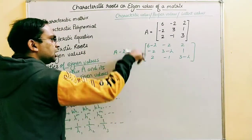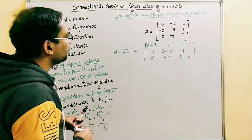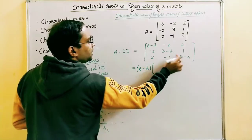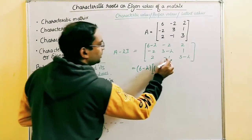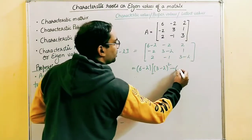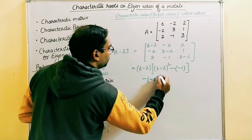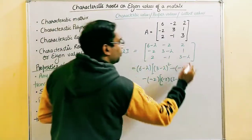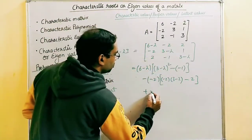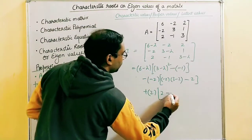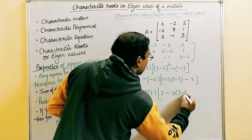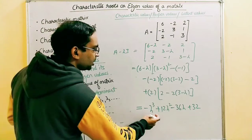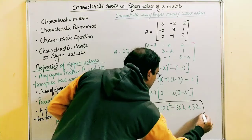We expand the determinant of A minus lambda I with respect to the first row. This gives (6-λ)[(3-λ)(3-λ) - (-1)(1)] minus (-2)[(-2)(3-λ) - (1)(2)] plus 2[(-2)(-1) - (3-λ)(2)]. On solving this, the characteristic polynomial comes out to be minus lambda cubed plus 12 lambda squared minus 36 lambda plus 32.